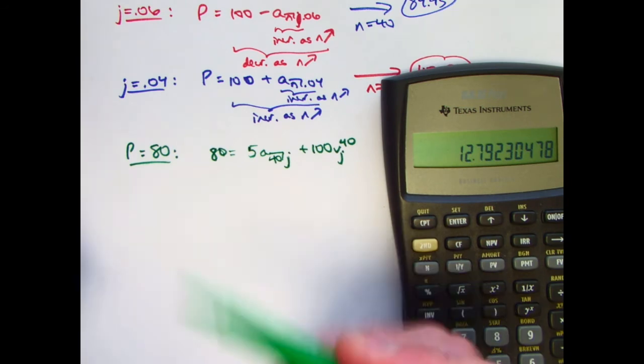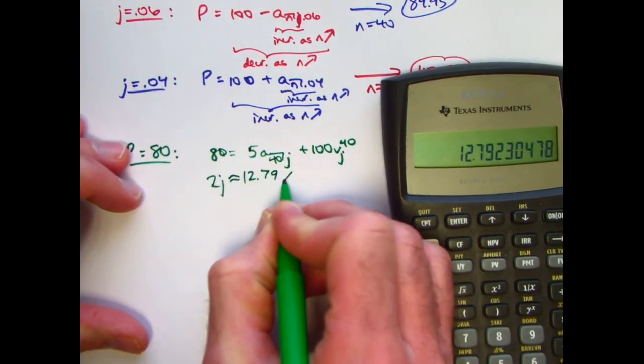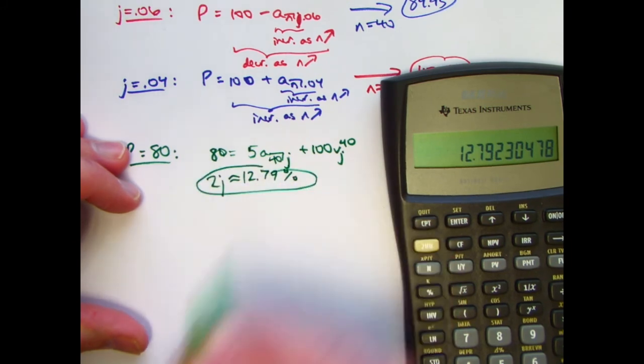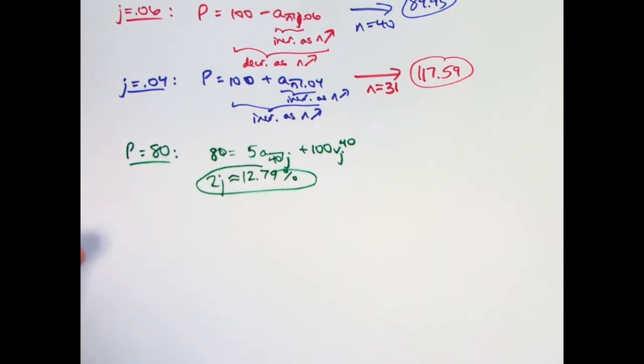Don't divide that by 100. It's already given as a percent. So the minimum annual yield rate would be twice that. Multiply that by 2. J, or 2J, which is the answer, is about 12.79%. And that would be the minimum nominal annual yield rate.